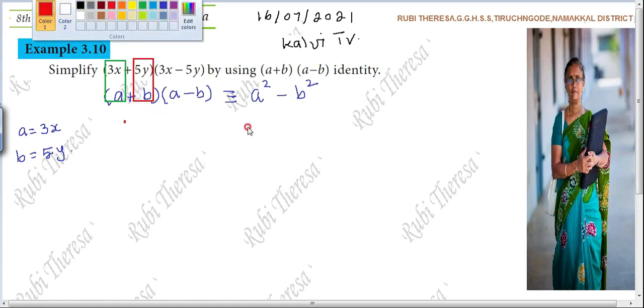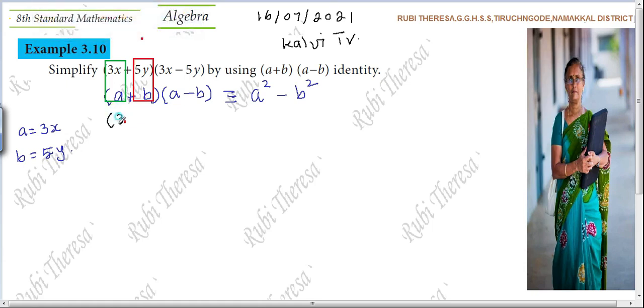So what do you have to write? 3x plus 5y into 3x minus 5y equal to A. In the place of A, what do you have? Very good. 3x the whole square. 3x the whole square minus. In the place of B, 5y. So, 5y the whole square.